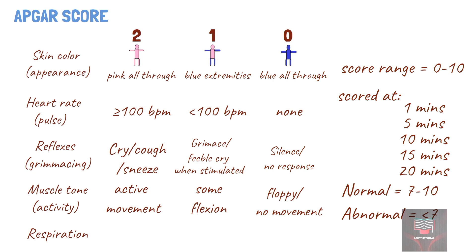For respiration, if there is a strong cry, it is given a score of 2. However, if breathing is slow or irregular, or if the baby is gasping, it is given a score of 1. And if there is absent respiration, it is given a score of 0.